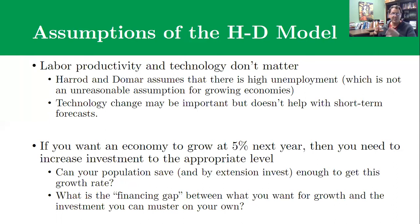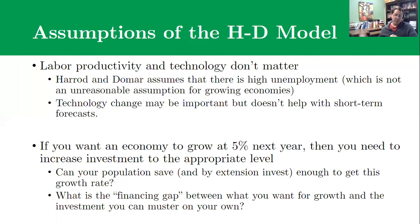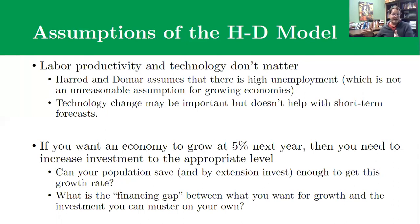Economists work out the relationship between capital — between machines and the size of your economy. Then they say: we want 5 percent economic growth next year, so what do we need to spend on machines to get there? We figure out the dollar value needed, then ask: where are we going to get that money? Can we get it from the population saving — people earning money, putting it in the bank, and businesses taking loans to buy machines? If people aren't able to save enough on their own, then there's what we call a financing gap: a gap between what people can save and what you need to achieve the growth required to change quality of life and lift people out of poverty.